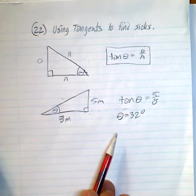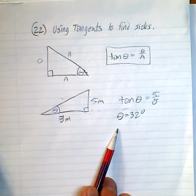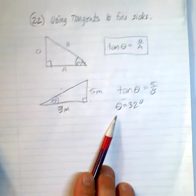So that means that theta is 32 degrees. Now theta is a Greek letter that we use to represent a missing angle. Now what we're going to be looking at is a situation where you might have a side but not the angle.